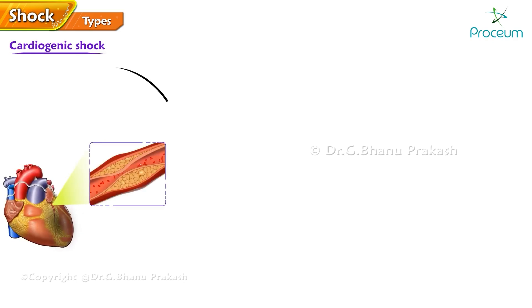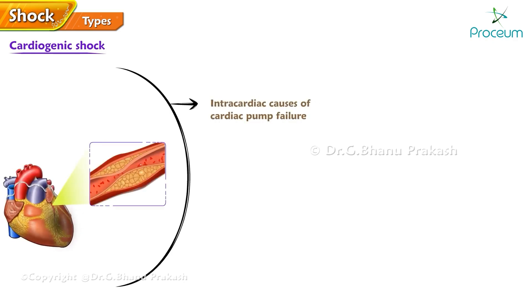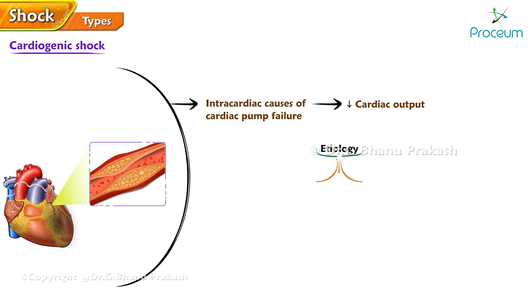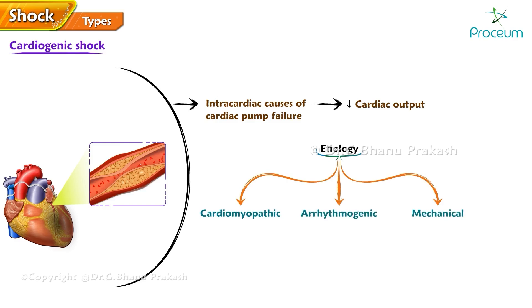Cardiogenic shock is due to intracardiac causes of cardiac pump failure that result in reduced cardiac output. Causes of cardiac pump failure leading to cardiogenic shock can be categorized into three main categories: cardiomyopathic, arrhythmogenic, and mechanical.